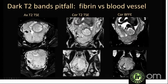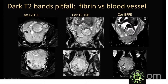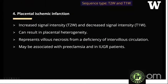An example from our institution: axial T2, coronal T2, and balanced FFE sequences. A dark intraplacental band was seen in one region — on balanced FFE that area appeared bright, consistent with a blood vessel, not a fibrin band. In a different region of the same patient, the dark intraplacental area remained dark on balanced FFE — confirming it as a true dark intraplacental band from fibrin deposition. Balanced FFE images are quite helpful for differentiating dark bands from blood vessels.